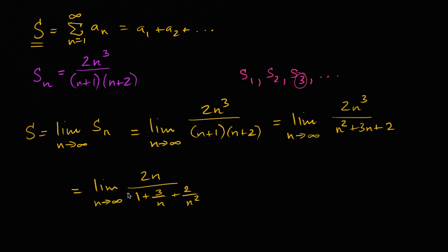And now when you look at it like this, it becomes pretty clear. This thing, as n approaches infinity, this thing is going to go towards infinity, but this thing down here, the denominator, this is going to go towards zero, this is going to go towards zero, so the denominator is going to go towards one. So this whole thing, the limit is going to go to infinity.